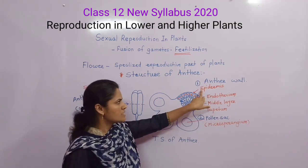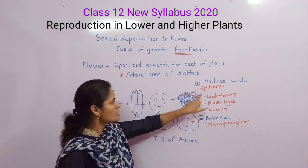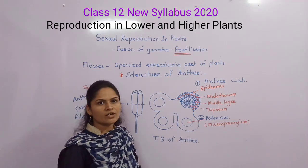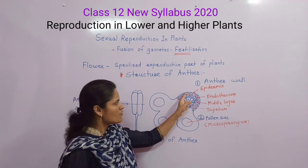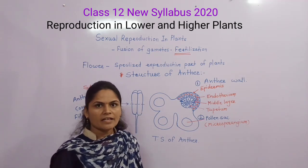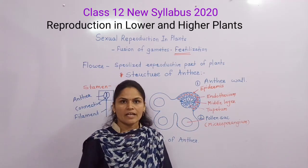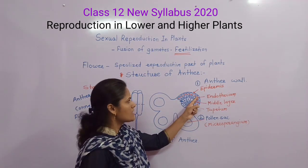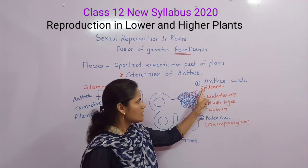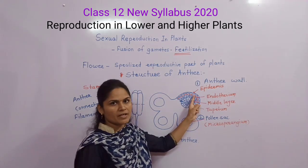The anther wall consists of four main layers: epidermis, endothecium, middle layer, and tapetum. Epidermis is the outermost layer of the anther wall. It consists of flattened, tubular cells and serves as a protective layer. Its function is protection of the inner parts of the anther wall. The second layer is endothecium, which is the sub-epidermal layer — present below the epidermis.